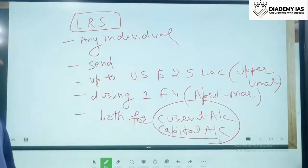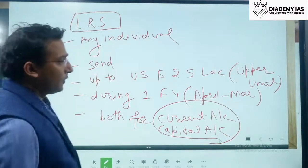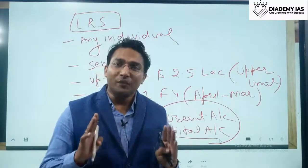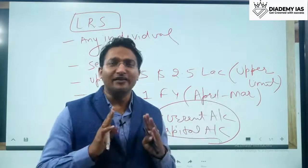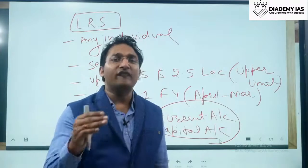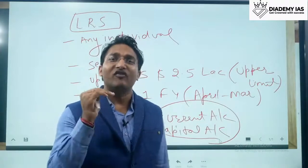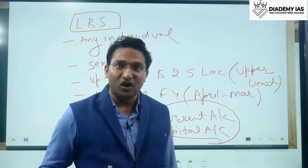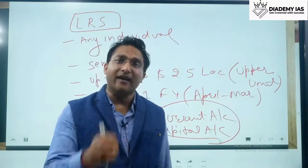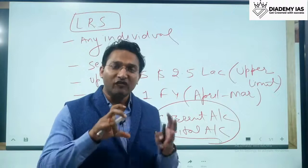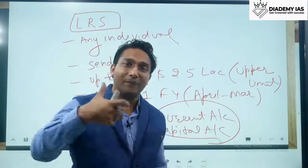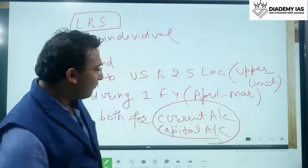There are also some restricted purposes. This money must not be used for terrorism, and it must not be sent to countries that are non-compliant with FATF guidelines. FATF — the Financial Action Task Force — oversees terror financing and keeps strict vigil on money laundering and terrorist financing. If a country is non-compliant with FATF, money cannot be sent there.